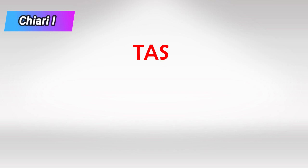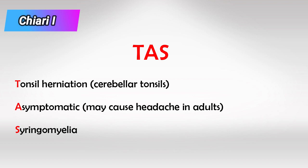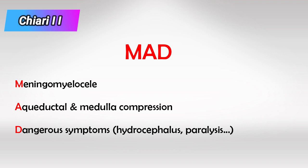To remember the features of type 1, remember TAS: tonsil herniation, asymptomatic, and syringomyelia. And for type 2, remember MAD: meningomyelocele, aqueduct and medulla compression, and dangerous because it has a lot of symptoms.